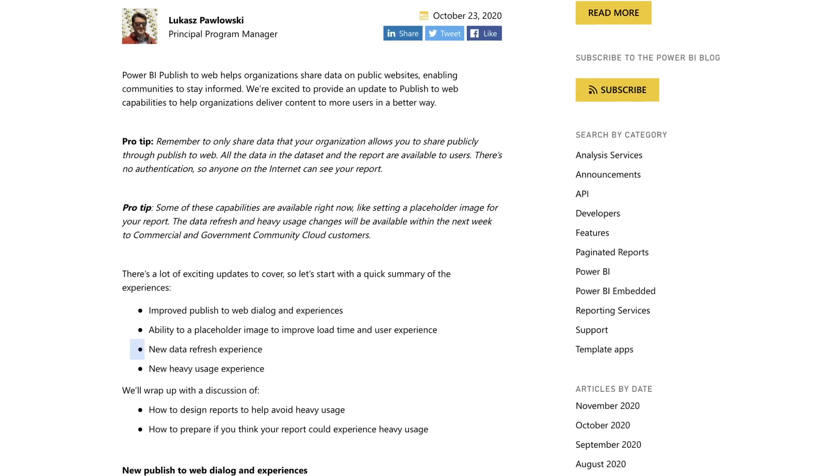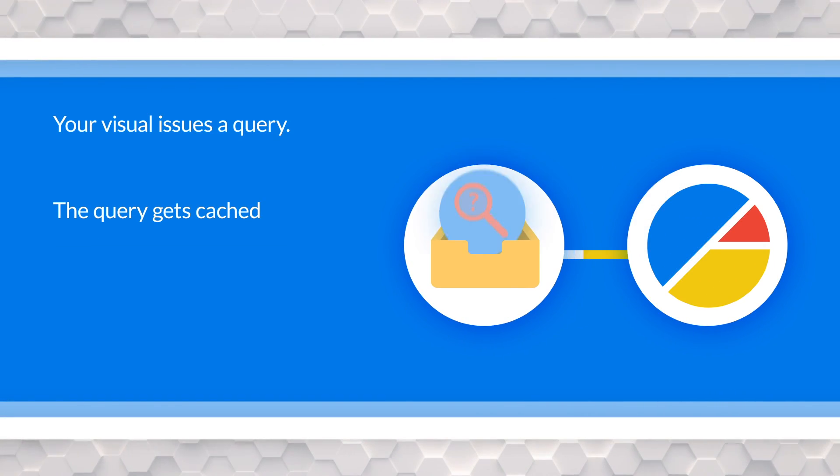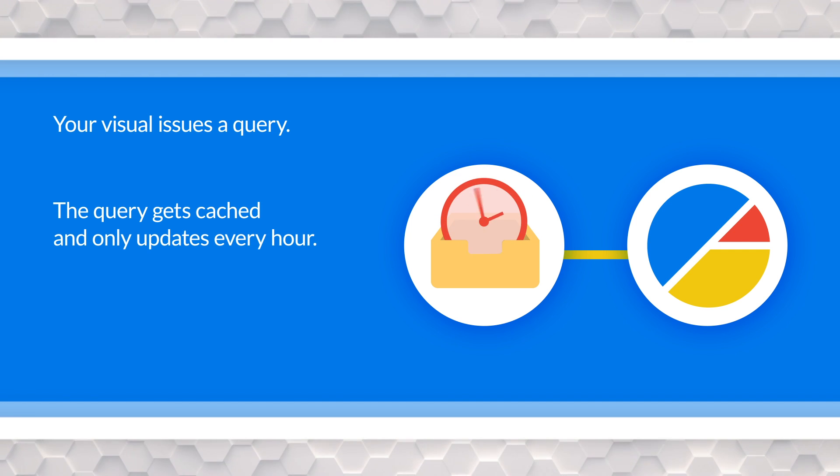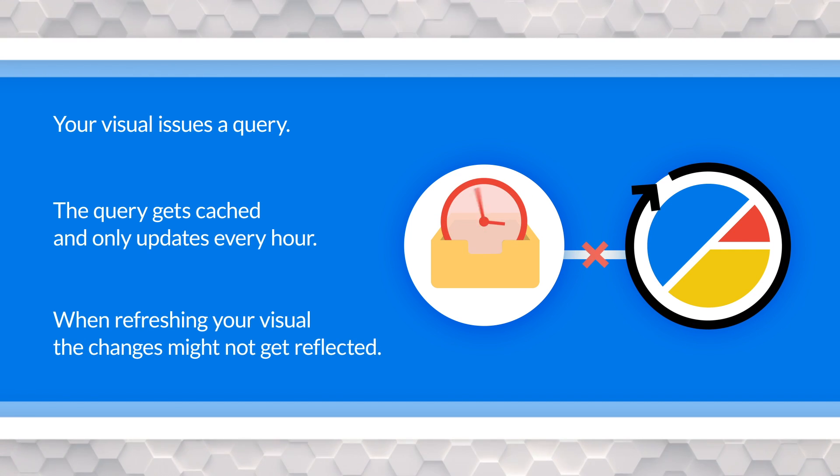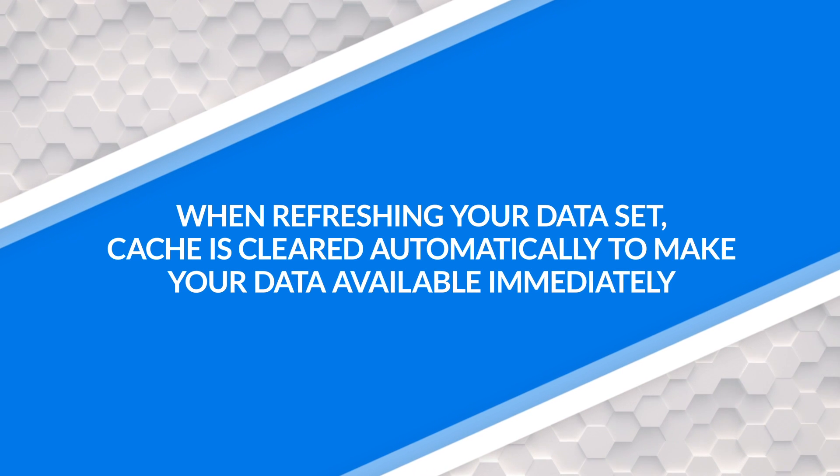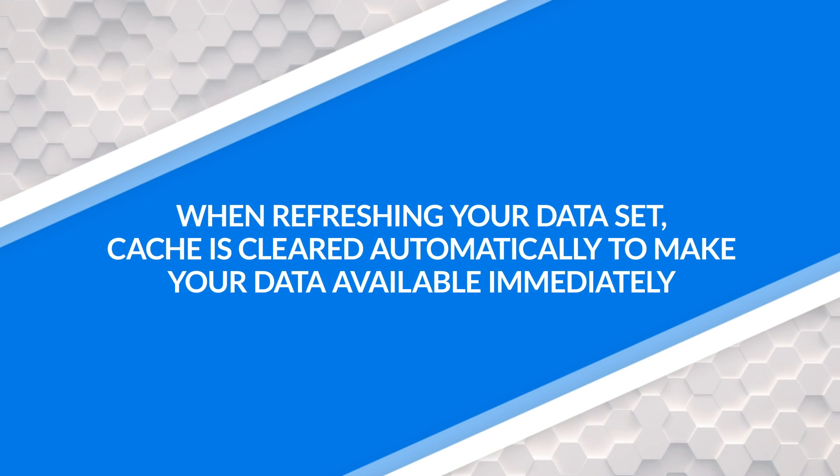Some other things that are coming — not available in the service just yet but coming very soon — is for data refresh. One of the problems with Publish to Web was this 60-minute or one-hour delay on when it would actually update. When your visuals issue a query, that query is cached and only gets updated every hour. So a refresh may not be reflected for an hour, which could get pretty annoying if you have information that needs to be up to date, like a news article. One of the changes announced is that once you refresh an imported dataset, it will actually clear the cache so that data is available immediately.